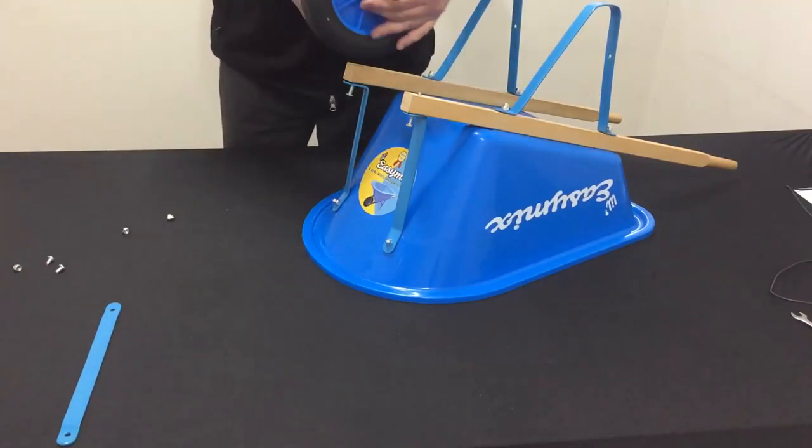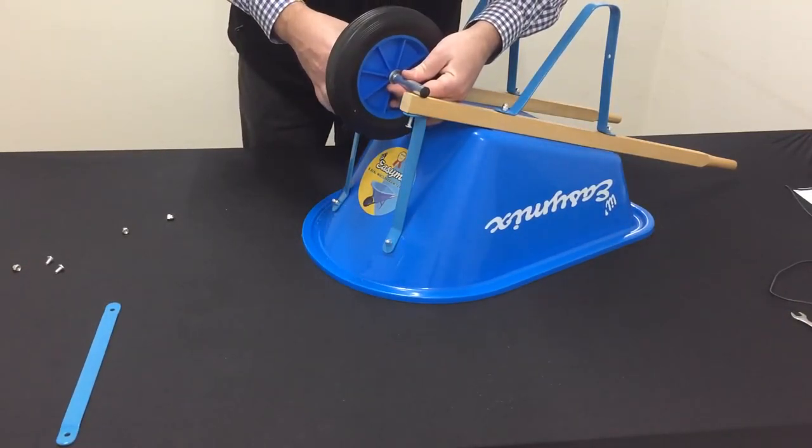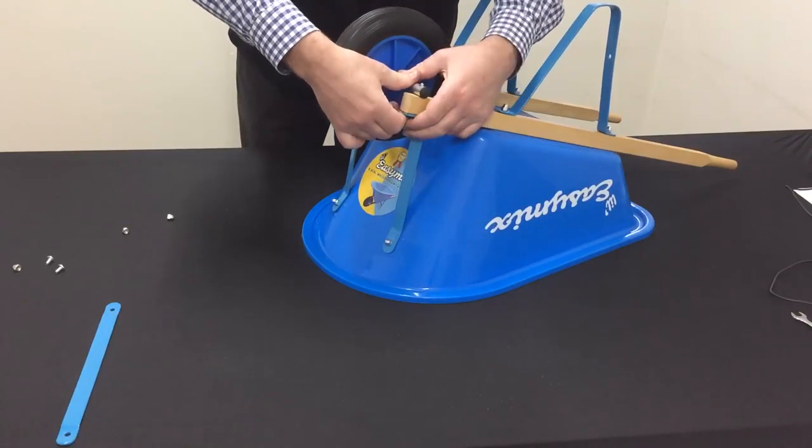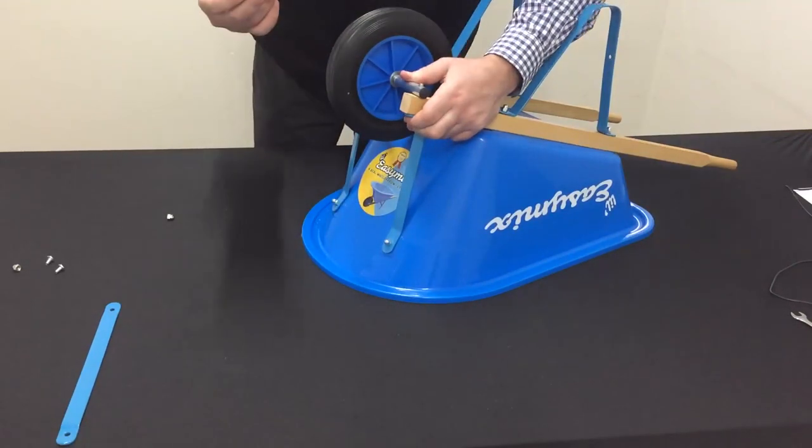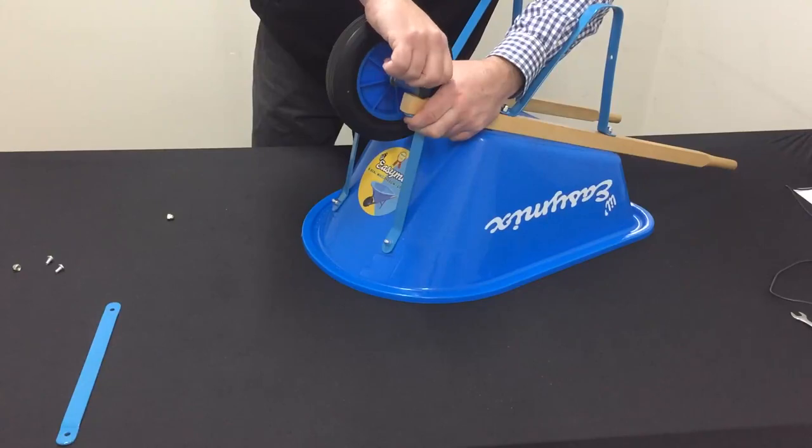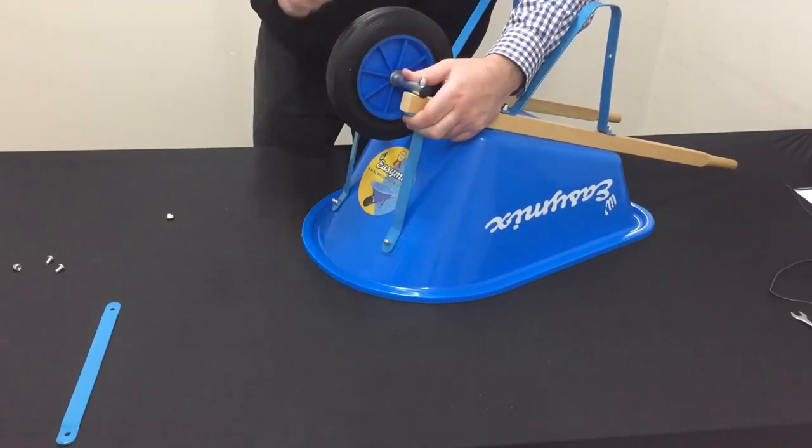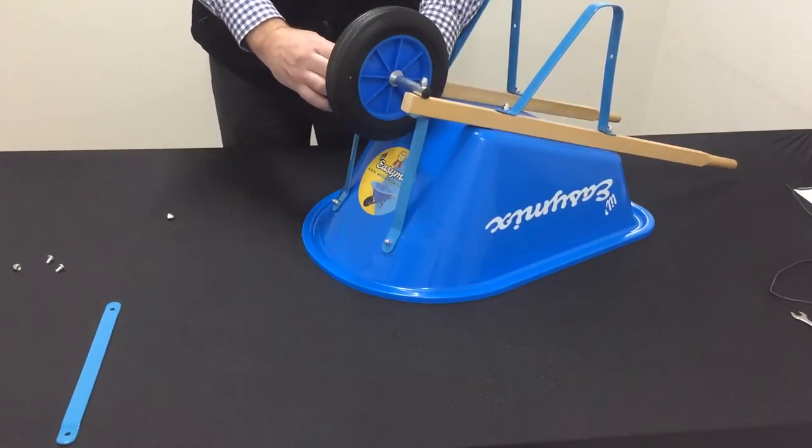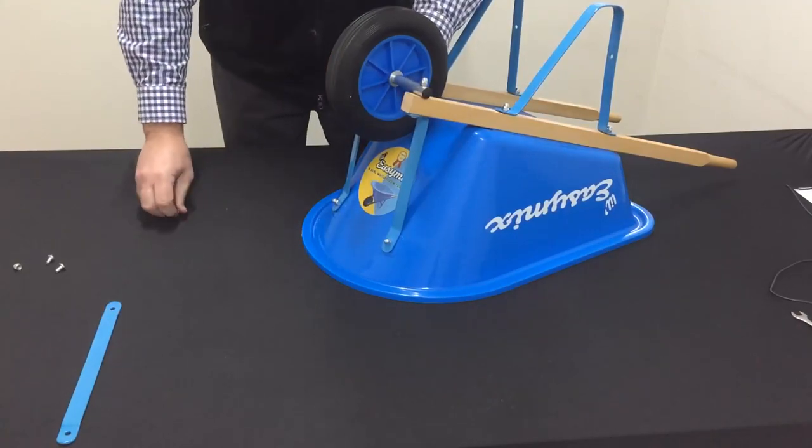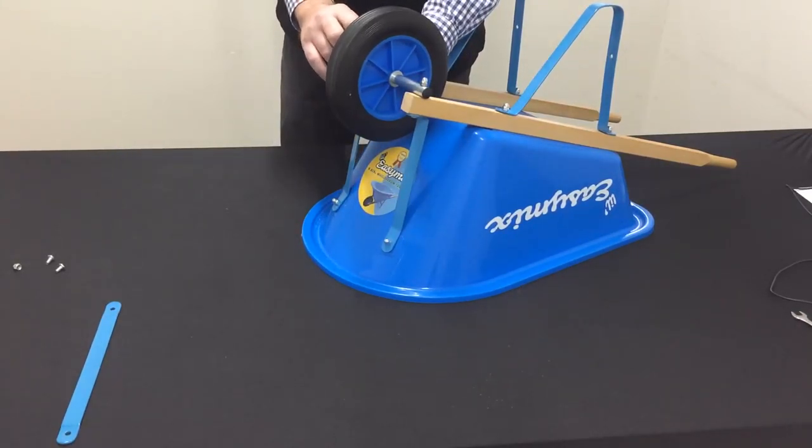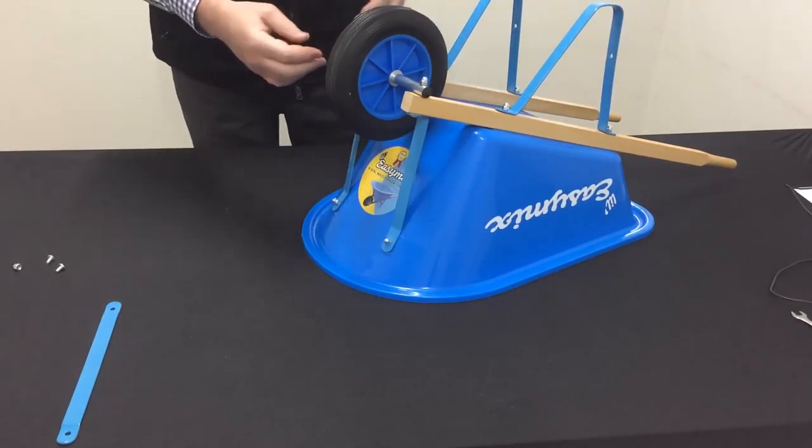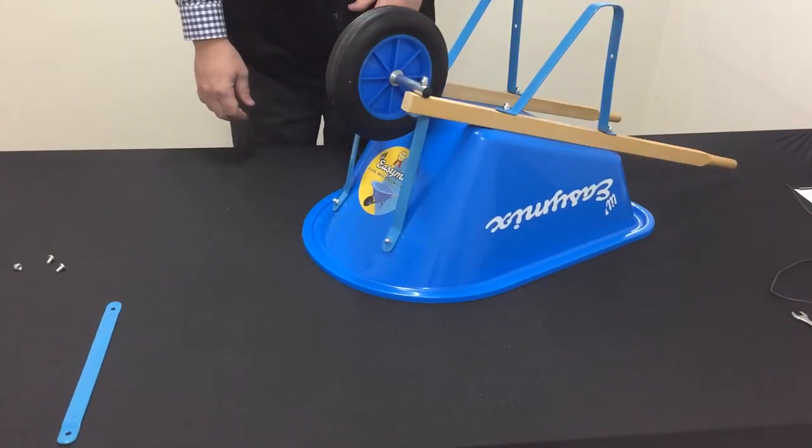Then we take the wheel, sit the brackets over the top of the bolt there, slide it through, and then taking one of the dome headed nuts, just fit to the top. Same on the other side. And then we are ready to tighten up the nuts and bolts to hold the wheel in place.